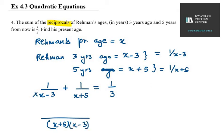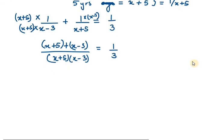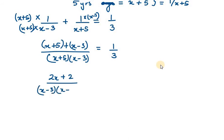The LCM of the left-hand side will be (X plus 5)(X minus 3). For the first term multiply by X plus 5, and for the second term multiply by X minus 3. So the numerator becomes X plus 5 plus X minus 3, equal to 1 over 3. Now we have to simplify this equation using cross multiplication, so 3 goes to the left-hand side.